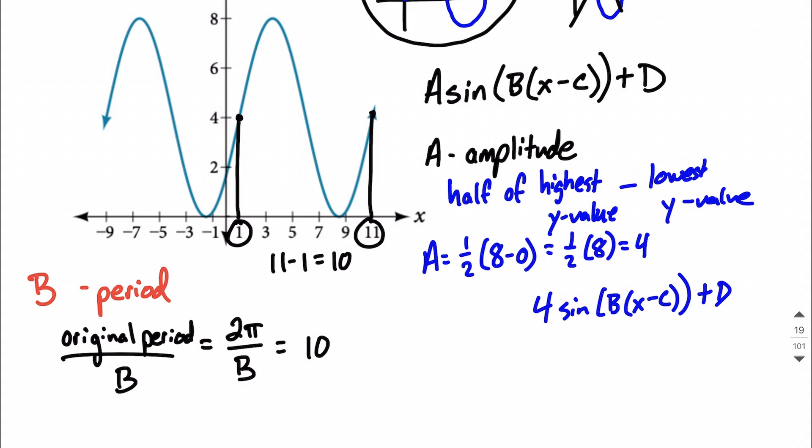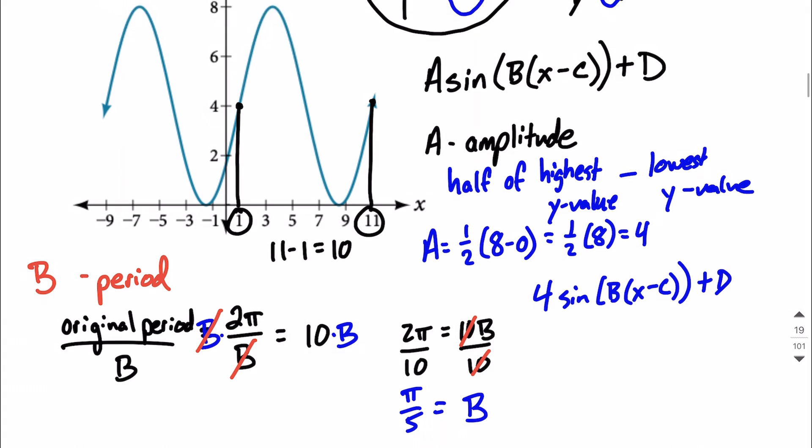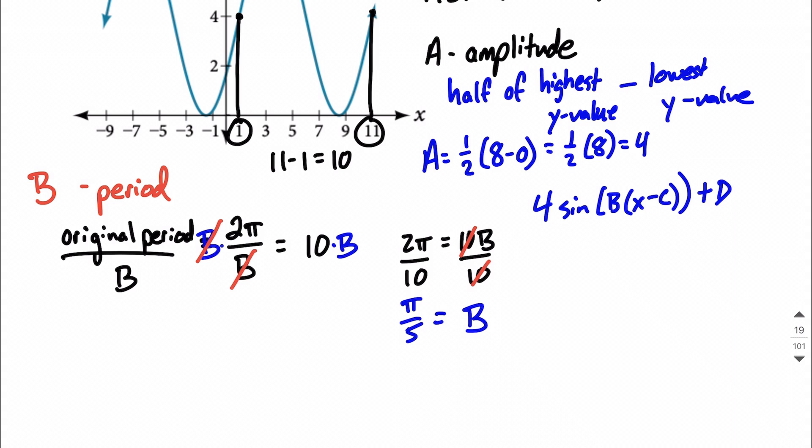So we don't know what B is quite yet, but let's go ahead and solve this down. We want to solve for B. I'm going to multiply both sides by B. On the left hand side this will eliminate the B and we'll be left with 2 pi. On the right hand side we currently have 10 times B. To get B by itself we'll divide both sides by 10. Quick reducing down and we're going to get B is pi over 5. So now as we build up our function we now have 4 sine of pi over 5 and then inside our parentheses x minus C with a plus D hanging out at the end.